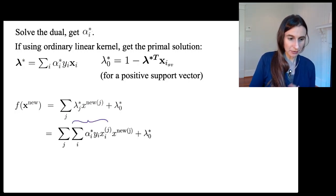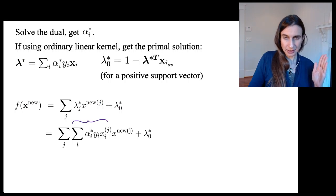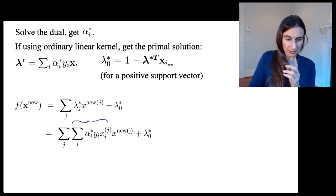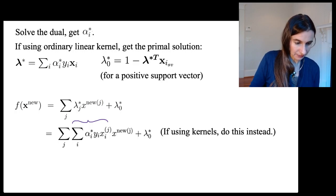All I did here was substitute the definition of lambda_j star from higher up in the slide. When I do that, I'm going to take that sum over j and pull it through, so that x stuff is going to be turned into a dot product.